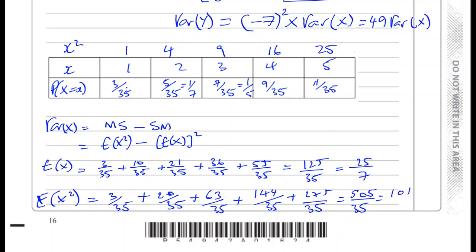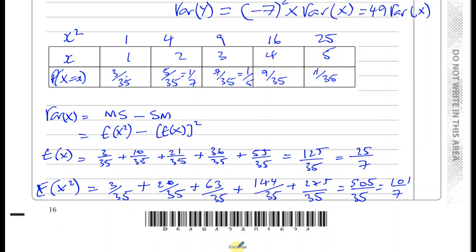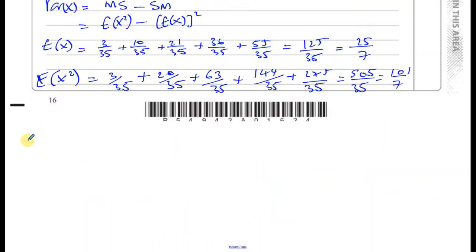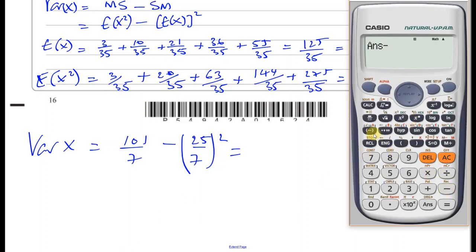So now we can find what the variance of X is. I know I'm not supposed to do this, but I'm going to just continue down here because I've run out of space. So I know the variance of X, therefore the variance of X is going to be E X squared, which is 101 over 7, minus the square of E X, which is going to be 25 over 7 but all squared. Let's see what that gives us. So that gives us 101 over 7 minus 25 over 7 squared, which gives us 82 over 49.